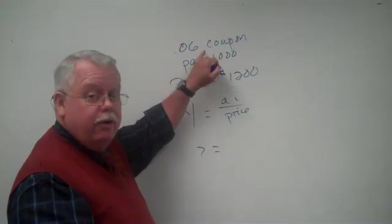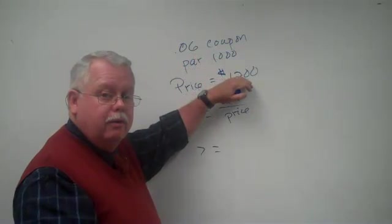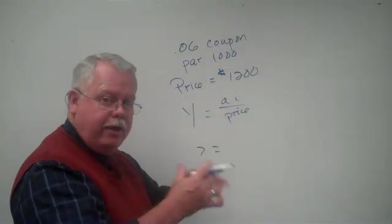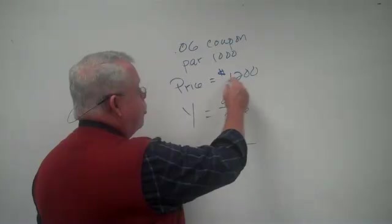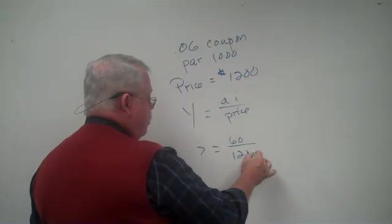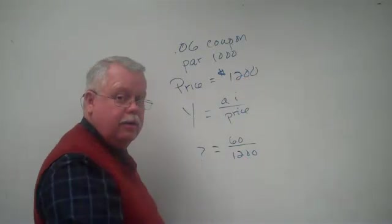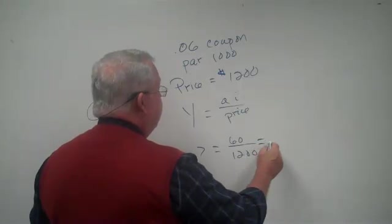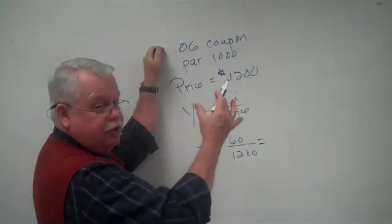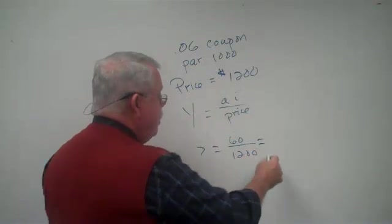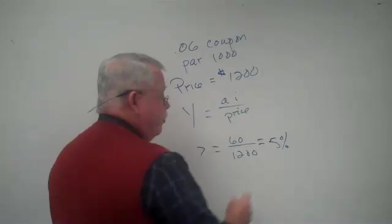How much interest does this bond pay? It pays 6% times $1,000. Coupon times par, annual interest. The annual interest, then, is $60. The price is $1,200. What do you get? The answer is that prices rose and interest rates, which were about 6% at the time the bond was issued, have fallen to 5%.